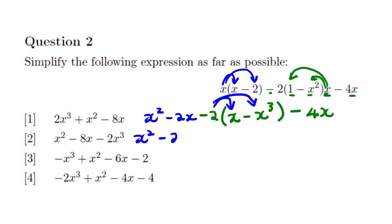The next process is to remove the bracket using the negative 2 outside. So we have x squared minus 2x. Negative 2 multiplied by x is negative 2x. Negative 2 multiplied by negative x to the power 3 is positive 2x to the power 3. Then we have the negative 4x. Now we need to simplify the like terms. Looking at terms with x raised to the power 3, we only have one, so we rewrite it as 2x to the power 3.